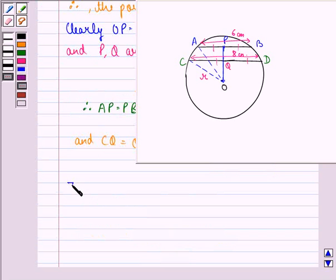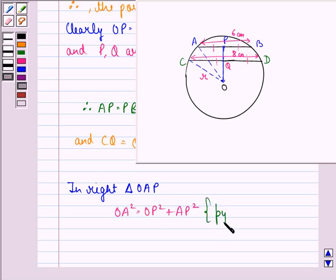We see that in right angled triangle OAP, that means this triangle, we have OA square is equal to OP square plus AP square. This we get by Pythagoras theorem.